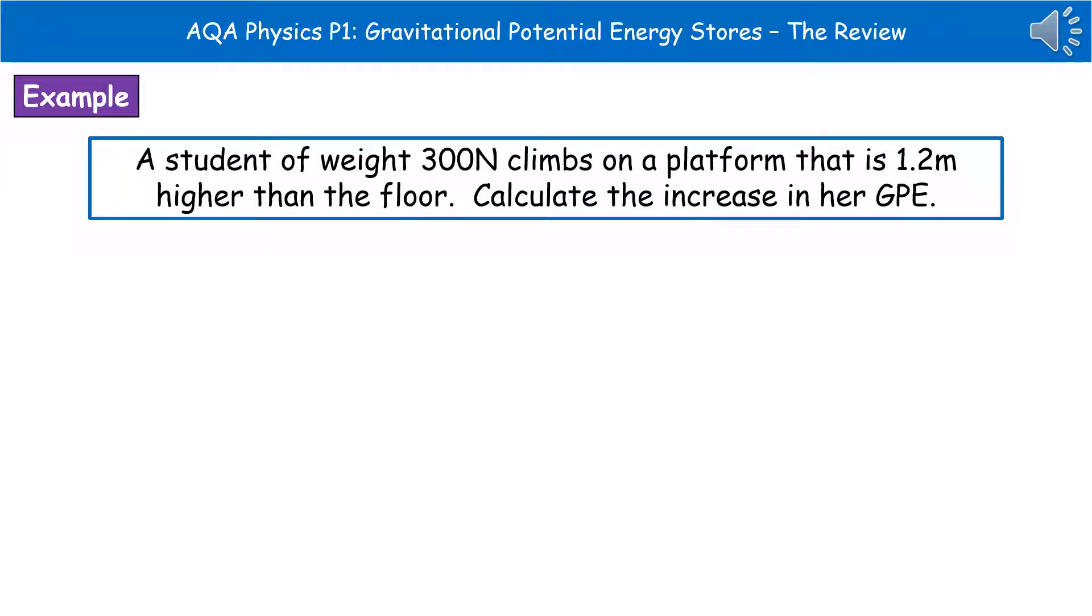To give you an example of the kind of question you could be asked here: a student of weight 300 newtons climbs on a platform that is 1.2 meters higher than the floor. Calculate the increase in her GPE. As always, when you're reading a calculation question, highlight, underline, or circle the important bits of information as you read it.